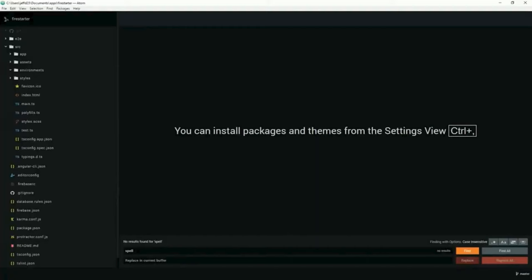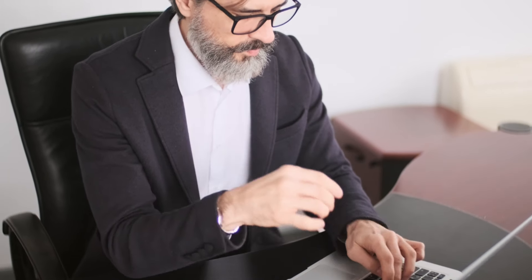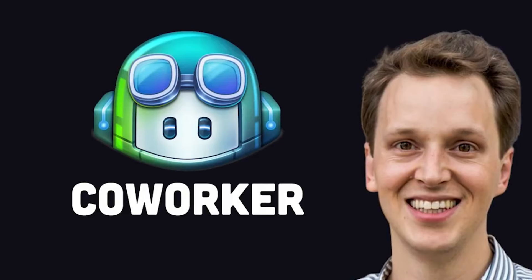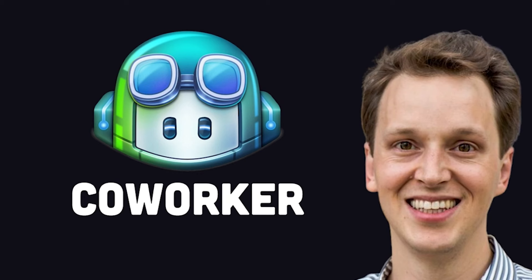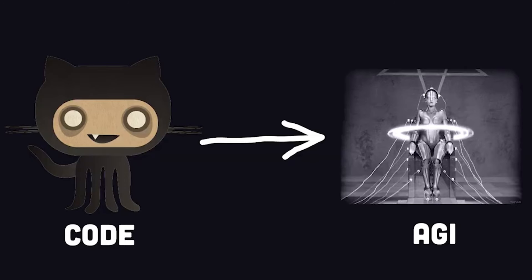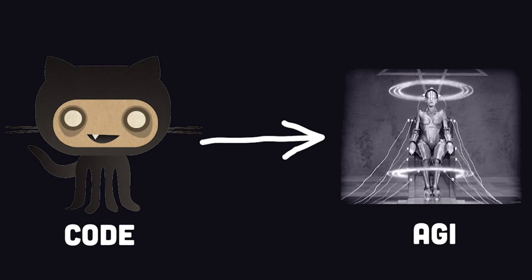Why are we talking about a code editor when there are already so many? Because nowadays there's this idea that AI would replace programmers — that programming is a skill soon to be replaced by artificial intelligence. A new startup called Magic has just raised 145 million dollars, partly from GitHub founders, to build an AI co-worker — not just a co-pilot — betting that coding could ultimately lead to artificial general intelligence, at which point everybody's job could be in trouble.